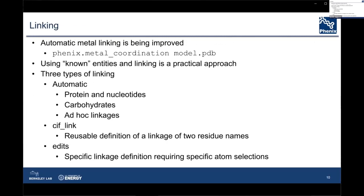Linking covers any connection of a chemical nature between two different entities. In the case of metal coordination, automatic procedures are improving, but using the metal coordination program will provide edits to allow manual manipulation. As demonstrated by the PDB's remediation of carbohydrates, using small reusable units — in that case monosaccharides — is preferable. Oligosaccharides are made up of monosaccharides linked to create the model; the same holds for large detergents or small peptide chains. There are three types of linking: the first and easiest is automatic linking, which includes protein chains, RNA, DNA, carbohydrates, and other links.